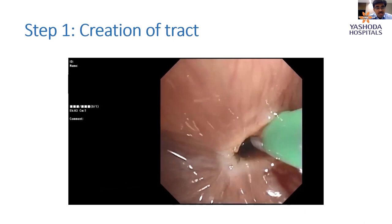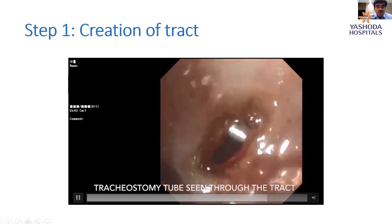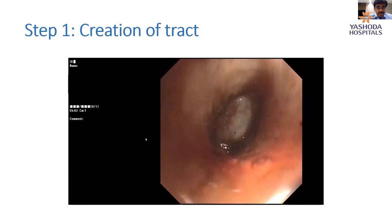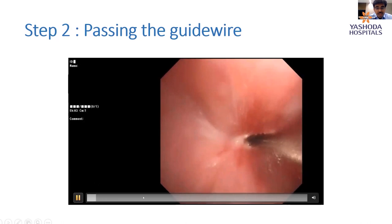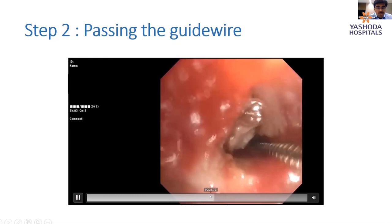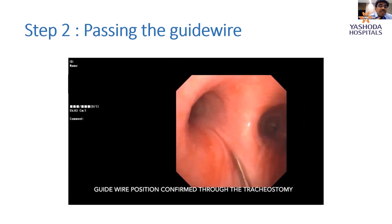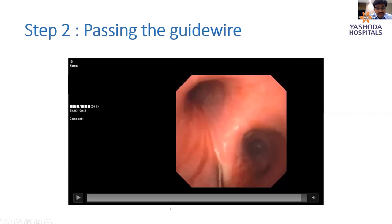Once through, we confirmed we were in the correct path by visualizing the tracheostomy through the opening. To reconfirm, a guide wire was passed through the rigid bronchoscope, past the tracheostomy — confirming the guide wire was through the stenosis from the vocal cords into the distal trachea. We could also use fluoroscopy, but since the patient was on tracheostomy, visualizing the guide wire was easier. With the path created, the next step was serial balloon dilation, starting from 6 mm.